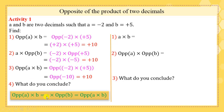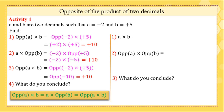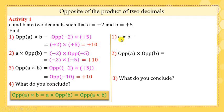What do you conclude? They have the same answer, so they are equal. Therefore: opposite of (a × b) = a × opposite of b = opposite of a × b. This is the first rule.